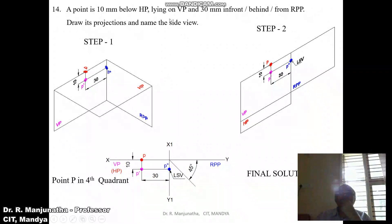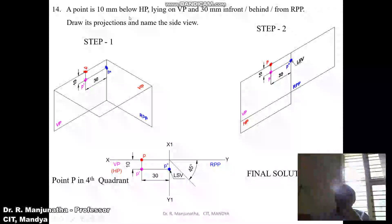Below HP can occur in the fourth quadrant and also in the third quadrant. So we need to solve the problem by considering both cases — starting first with the fourth quadrant. In the fourth quadrant, the angle range is 0 to 270 degrees.